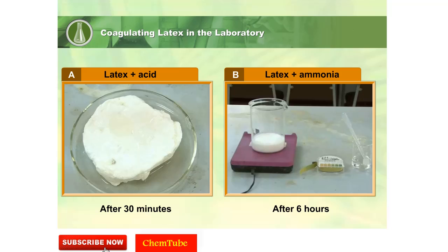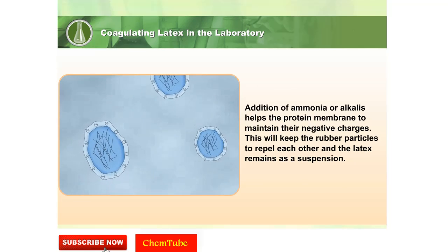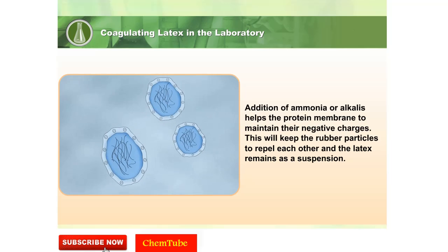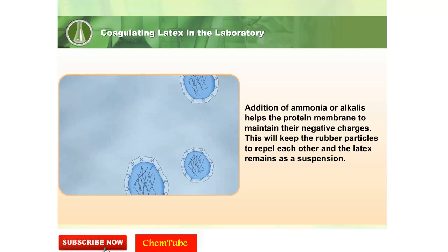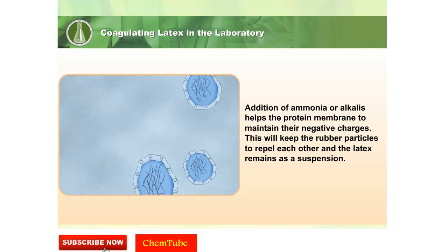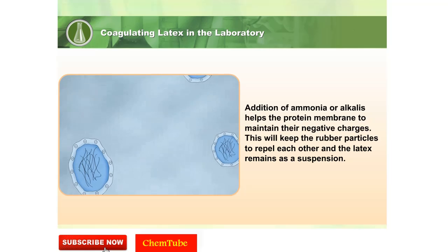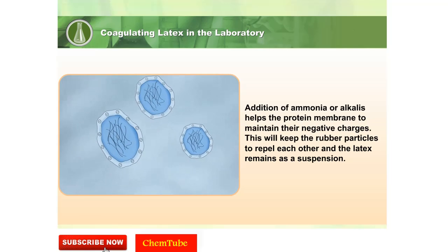Why does latex in box B not coagulate? Addition of ammonia or alkalis helps to maintain the negative charges. This keeps the rubber particles repelling each other, and the latex remains as a suspension.